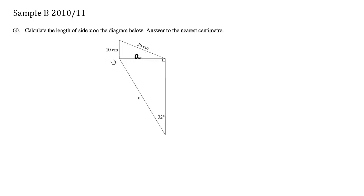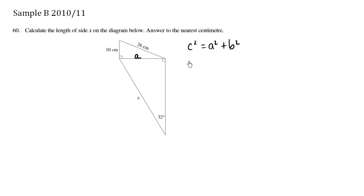Let's solve for a first. This is a right angle triangle, so we can use the Pythagorean Theorem. We have c squared equals a squared plus b squared. This is my c — the hypotenuse. This is my a, and this is my b.